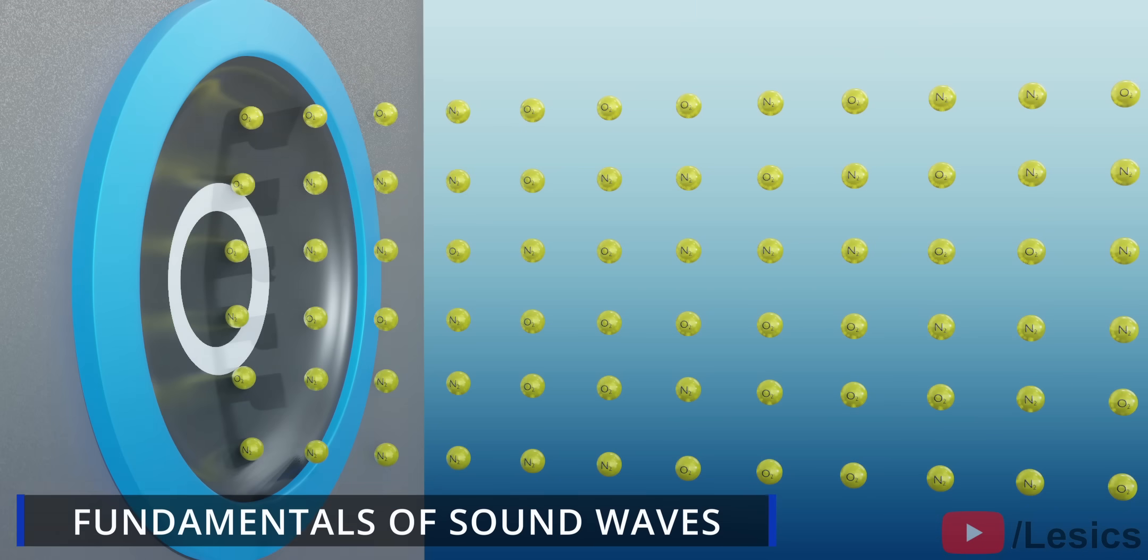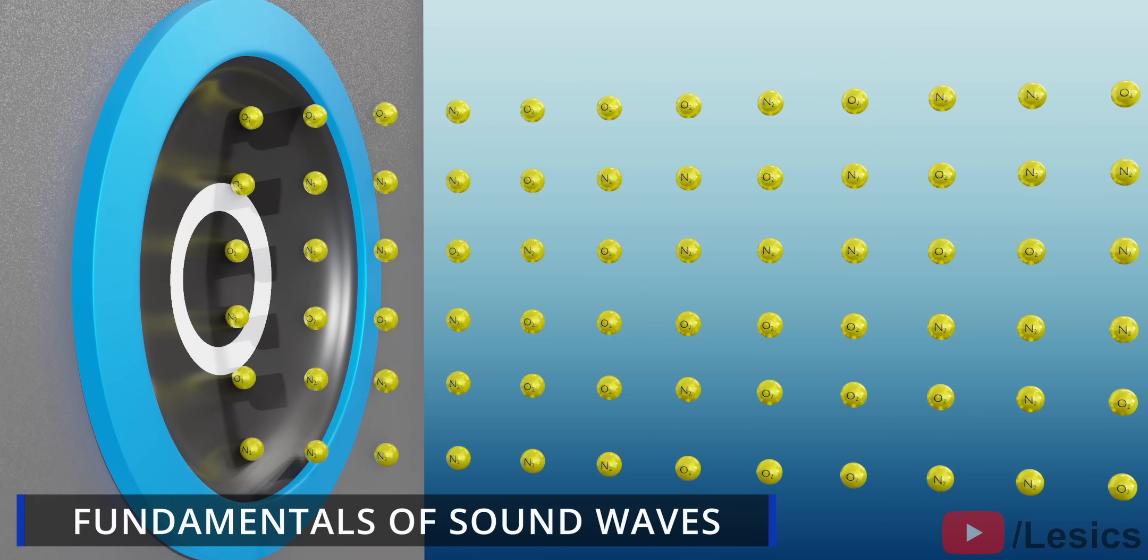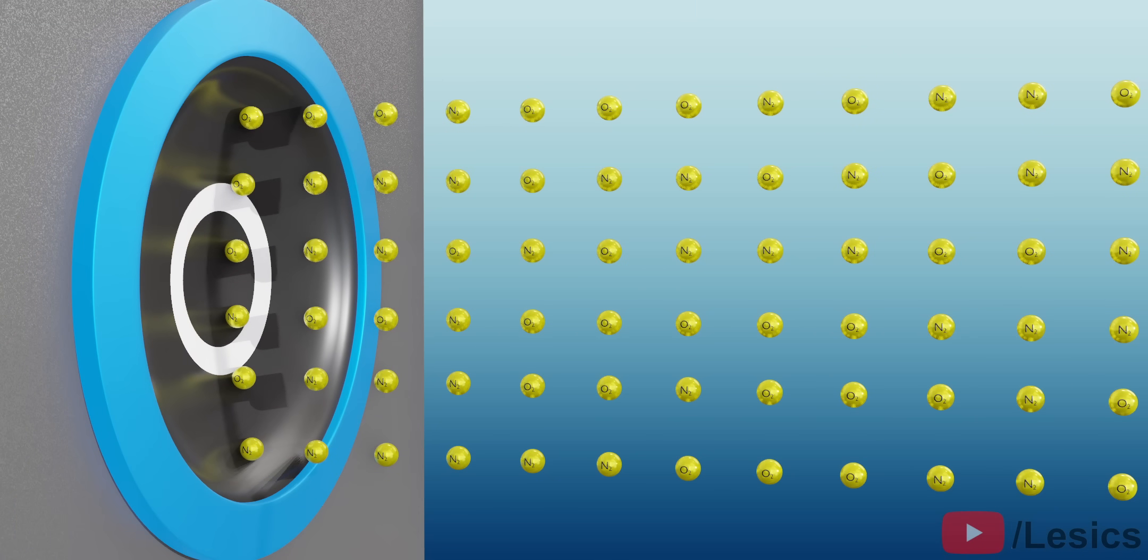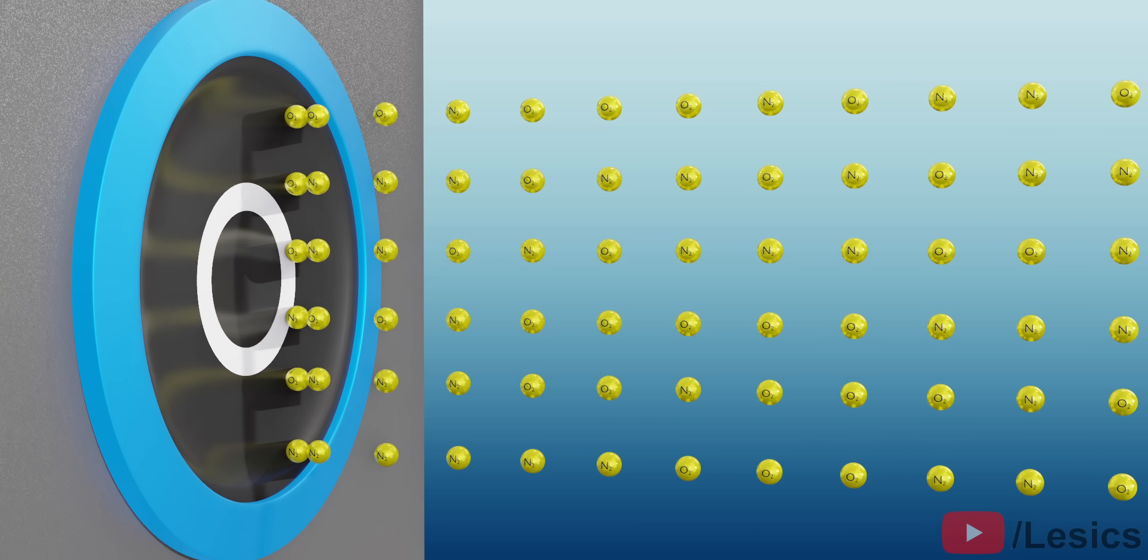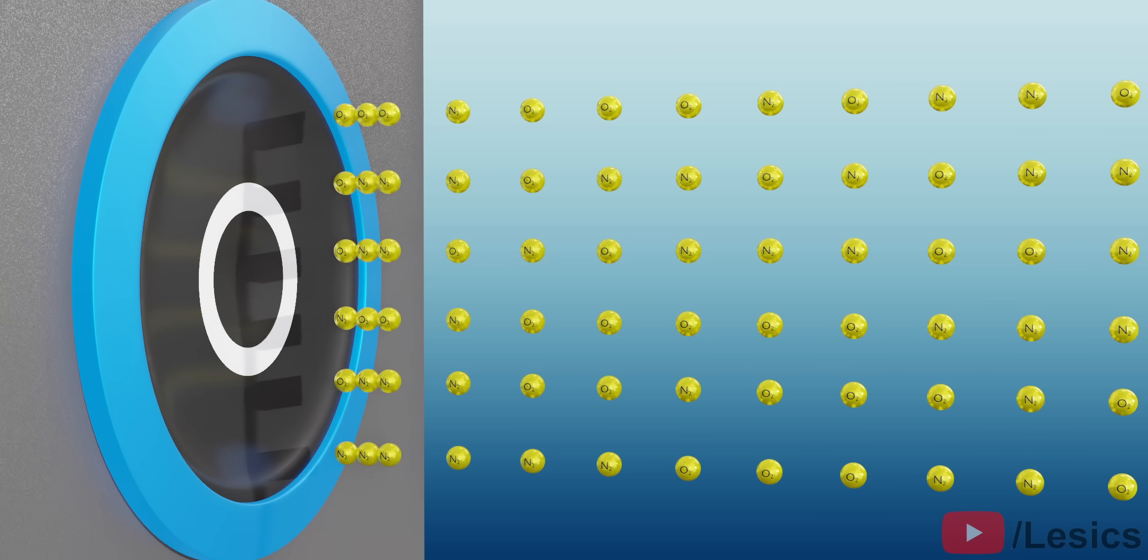Let's first understand how sound is generated and propagates. The air particles around this speaker are at normal pressure. When the diaphragm moves to the right, one layer of air particles will collide with the next layer and this process continues. Now you can see a compressed layer of air particles.